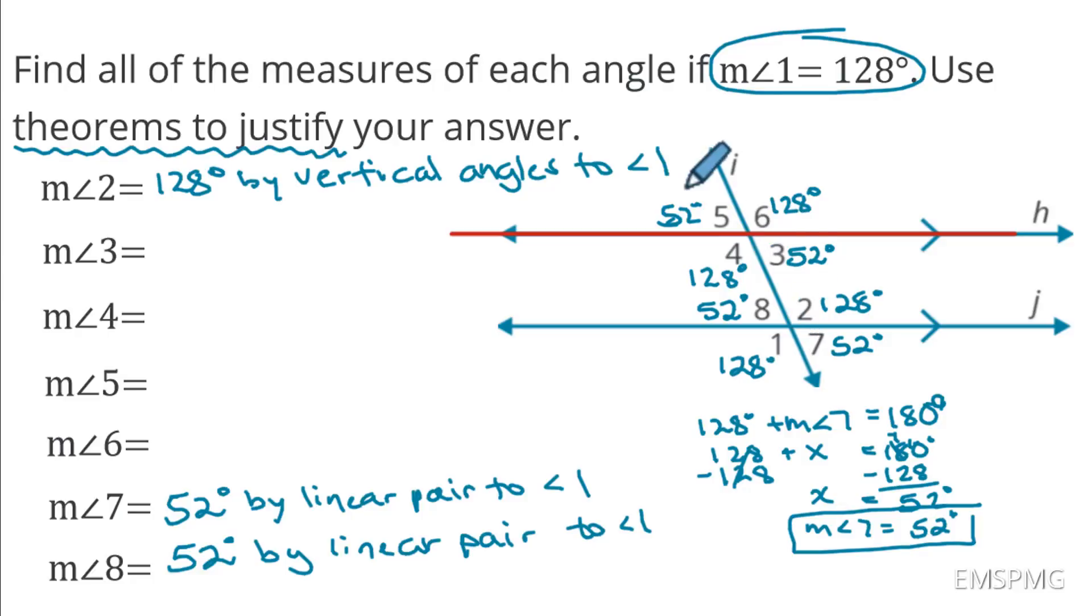So if I look at angle 5, angle 5 is 52 degrees. I can use any sort of different kind of angles. So let's go ahead and use our new types of angle theorems we talked about. Let's compare it to angle 7. Angle 5 and angle 7, we're noticing, are congruent. They're both 52 degrees. And if I look at angle 5 to angle 7, they are alternate exterior angles. So I know that alternate exterior angle theorem to angle 7. So angle 5 is going to be 52 by alternate exterior angle theorem to angle 7.